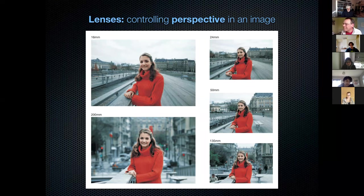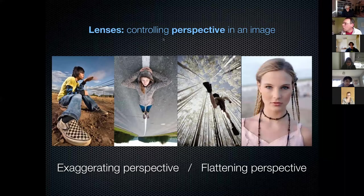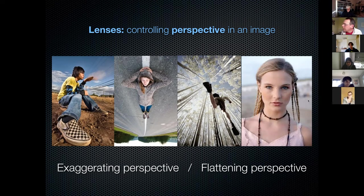A few more examples of different lenses altering and controlling the perspective of an image. With the wide angle lens on the left, it's exaggerating perspective. On the right, a longer lens has been used to flatter the perspective — it's more flattering for the face and brings the background in. One thing to notice is that wide angles tend to give you more depth of field, whereas longer lenses tend to reduce the depth of field. So a telephoto lens is good for throwing backgrounds out of focus in portrait photography.